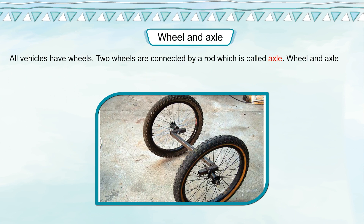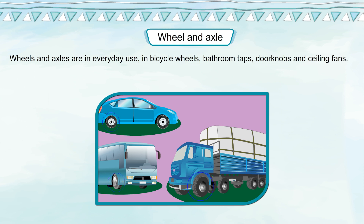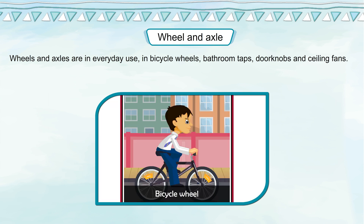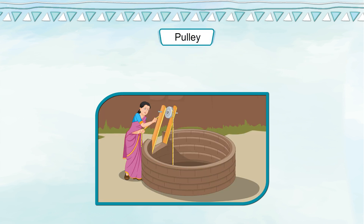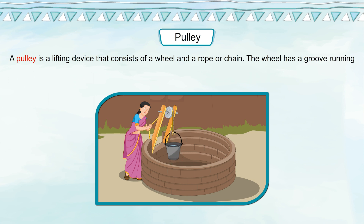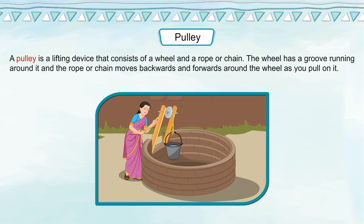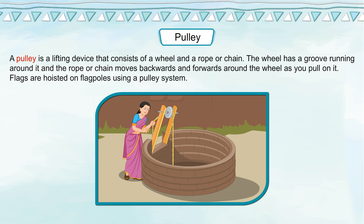Wheel and Axle: All vehicles have wheels. Two wheels are connected by a rod which is called the axle. Wheel and axle makes it easier to move a heavy object. Wheels and axles are in everyday use. A pulley is a lifting device that consists of a wheel and a rope or chain. The wheel has a groove running around it and the rope or chain moves backward and forward around the wheel as you pull on it. Flags are hoisted on flag poles using a pulley.